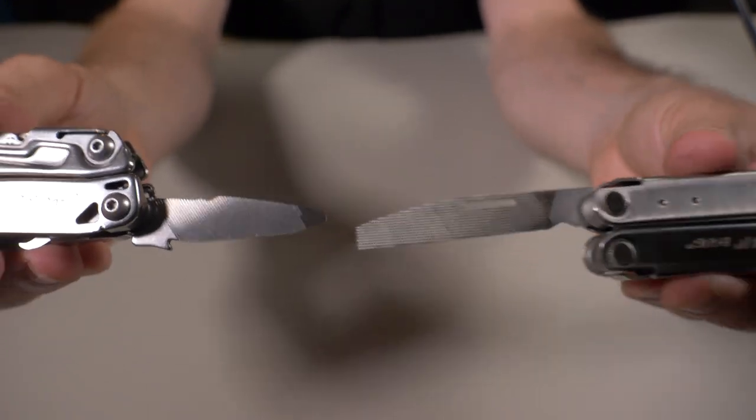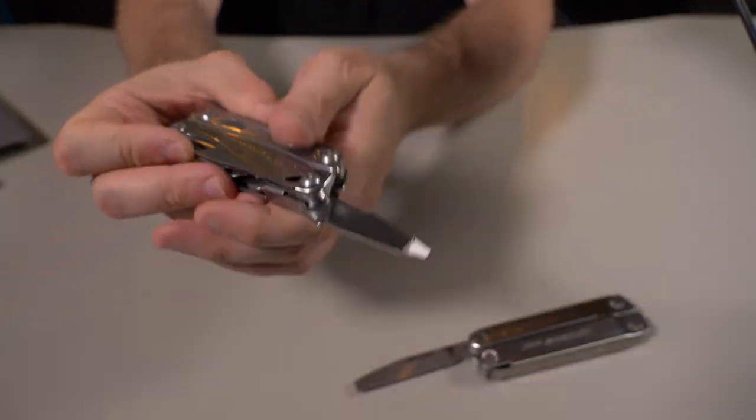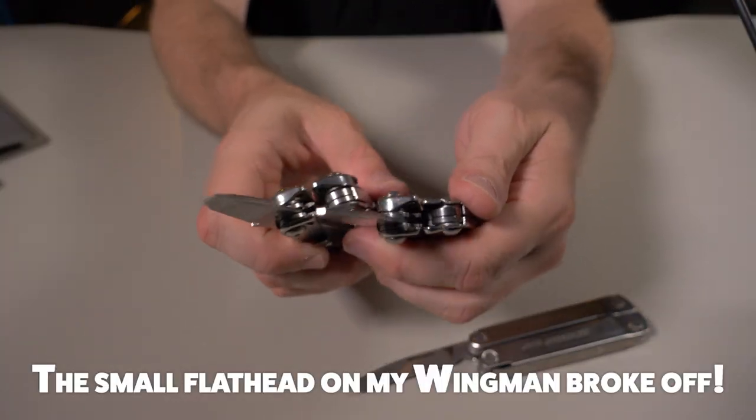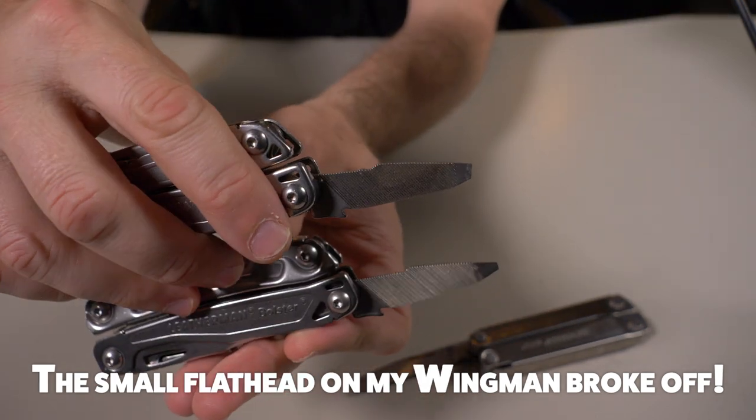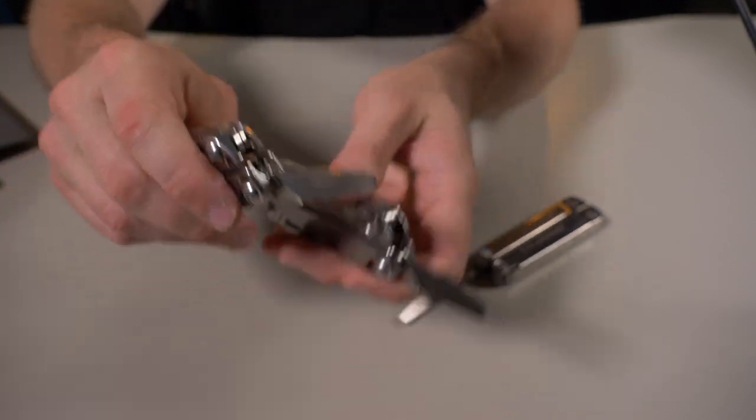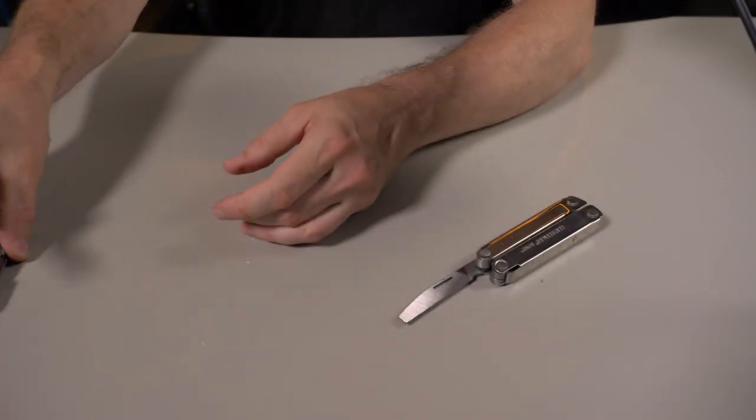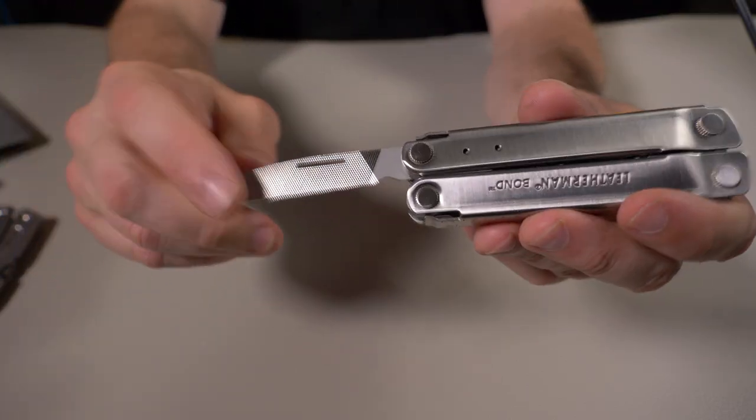As opposed to the small miniature file we see right here on the Bolster, the Sidekick had the same small file. If I bring in the Wingman, it's the exact same file with the ruler on the opposite side. Like I said, this is a definite negative for me. I use a file and a saw all the time where I work.